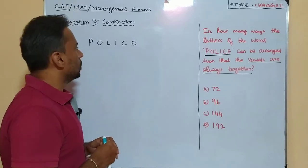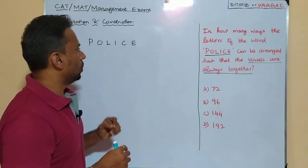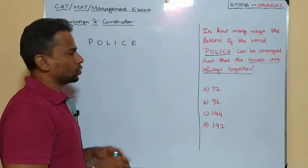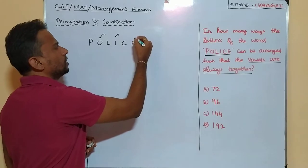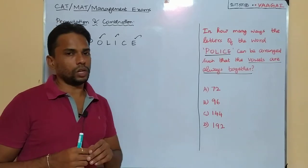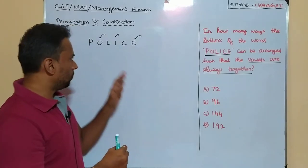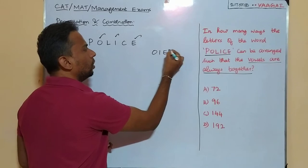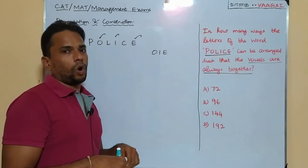Let us see an approach to solve this question. Given that the vowels are always together, let us pick the vowel letters from the word. We know vowels are A, E, I, O, U. Here O is a vowel, I is a vowel, and E is a vowel. So totally, out of six letters, three of them are vowels — O, I, E — and they should not be separated by a consonant.